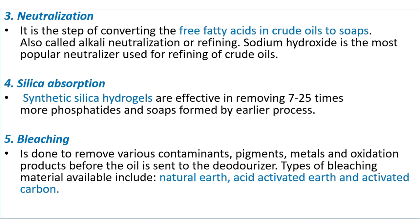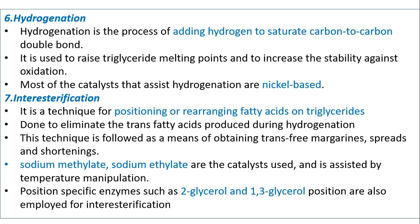Bleaching is done to remove various contaminants, pigments, metals and oxidation products before the oil is sent to the deodorizer. Types of bleaching materials include natural earth, acid activated earth and activated carbon. Hydrogenation is the process of adding hydrogen to saturate carbon-to-carbon double bonds. It is used to raise triglyceride melting points and to increase stability against oxidation. Most catalysts that assist hydrogenation are nickel-based.